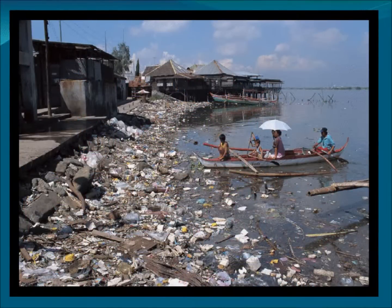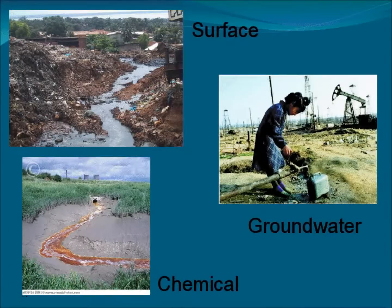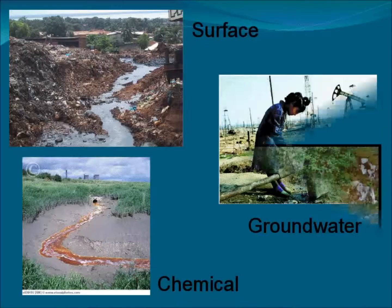It's important when looking into water pollution to know its precise definition. According to Webster's dictionary, pollution can be defined as the action of polluting, especially by environmental contamination with man-made waste. There are several types of water pollution, including surface, groundwater, and chemical water pollution.